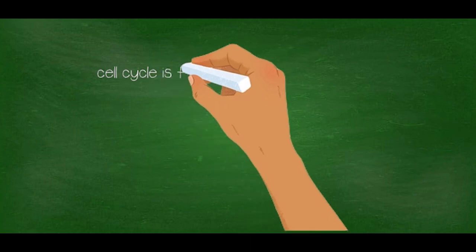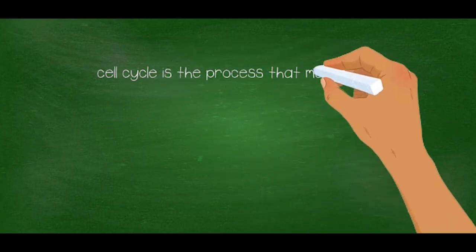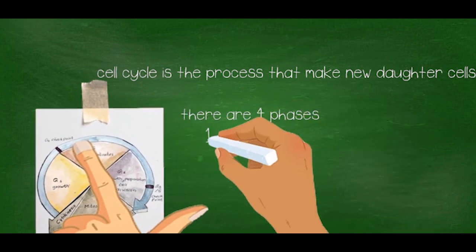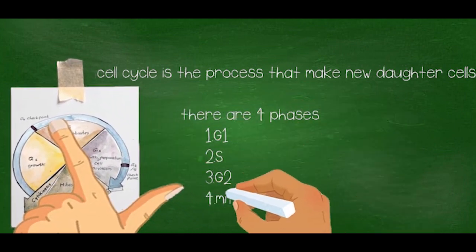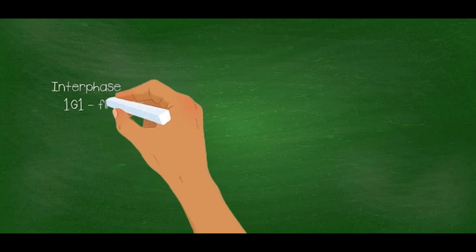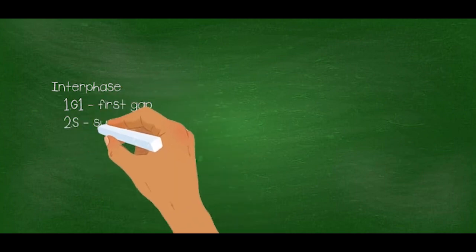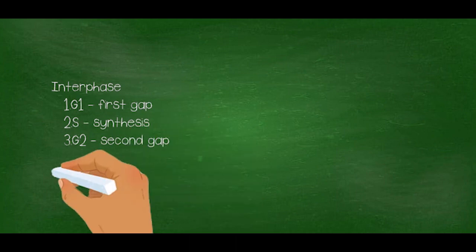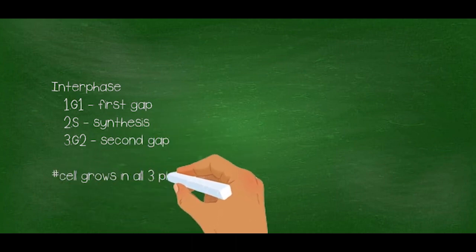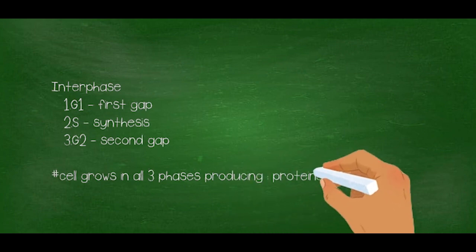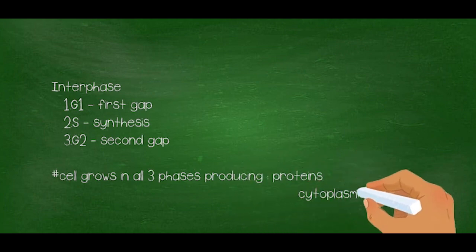The cell cycle is the process that makes new daughter cells. There are four phases: G1, S, G2, mitosis and cytokinesis. G1, S and G2 phases are also known as interphase. The cell grows during these three phases, producing proteins and cytoplasmic organelles.